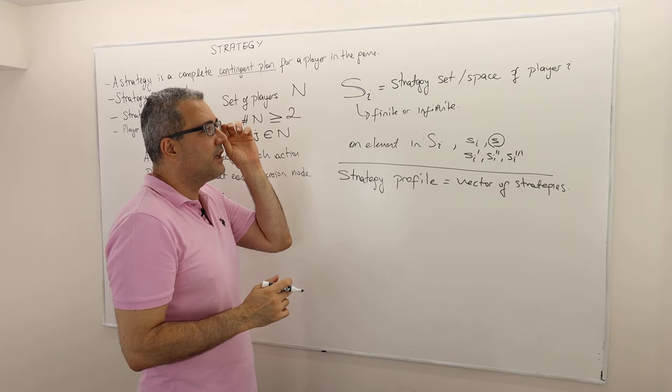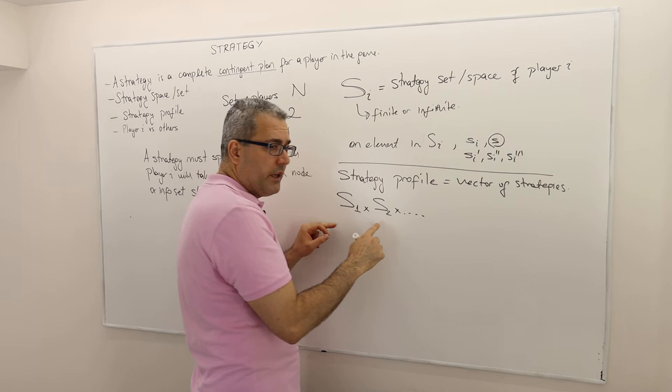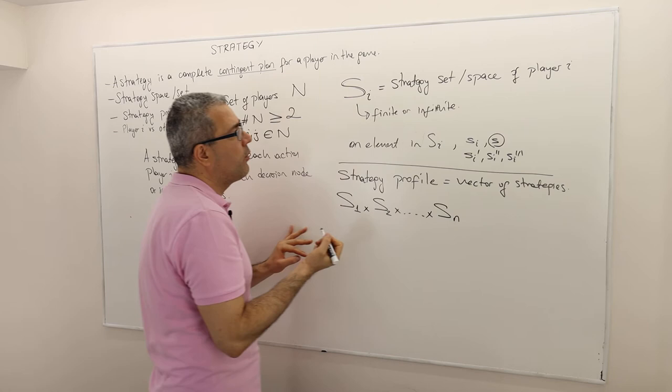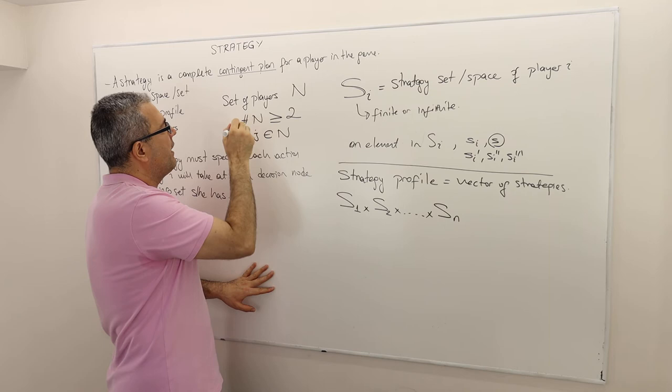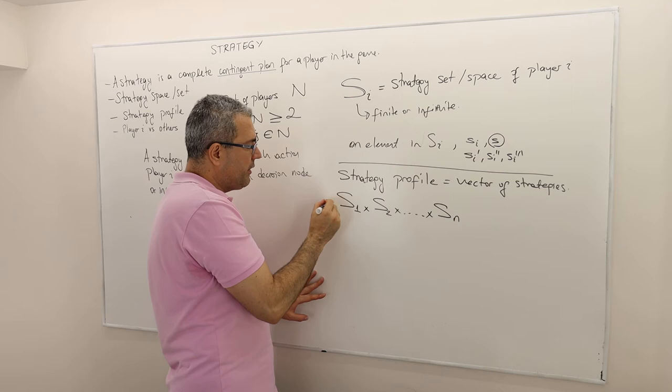Another piece of notation we need to know. Well, strategy profile is actually a vector of strategies. It's a mathematical object. So if each player has a strategy set S sub i, then that means this is the first player strategy, second player strategy space. What I'm doing is cross product. Once again, if you don't know what cross product is or Cartesian product is, please go and check the math reviews. S_n. So let's suppose the number of n is equal to small n. So there are n many players.